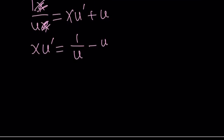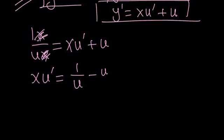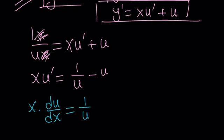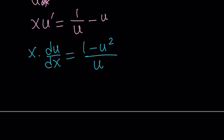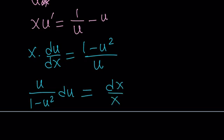Since u prime is the derivative of u with respect to x, I can write x times du over dx equals 1 over u minus u. We can make a common denominator and write the right-hand side as 1 minus u squared over u. Now I want to separate the variables — put all the x terms on one side and all the u terms on the other — giving us u over 1 minus u squared du equals dx over x.